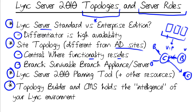In Lync 2010 there is an application called Topology Builder. This is absolutely required when you're deploying your topology initially, and you also use it when you expand or contract later. If you want to add another server to your front-end pool, you make that change in Topology Builder first. If you're going to decommission a server, you go to Topology Builder and decommission, then remove the box from your topology. The Topology Builder and the underlying topology feed into a SQL Server backend database called the Central Management Store, or CMS Database, which holds the intelligence of the Lync environment.